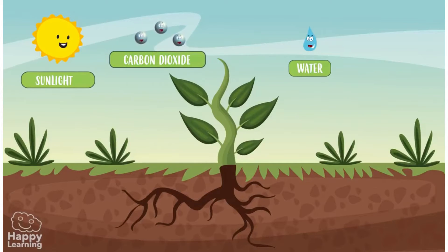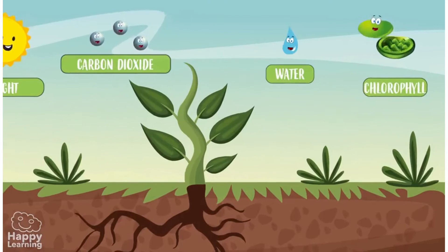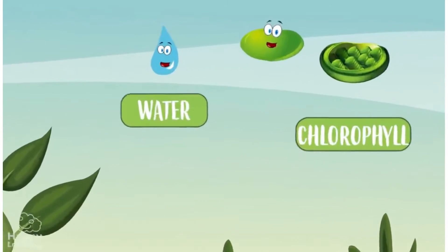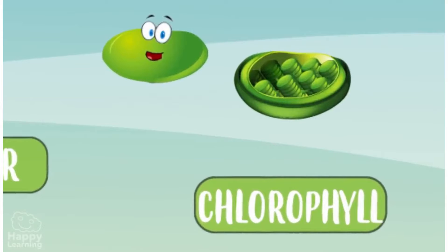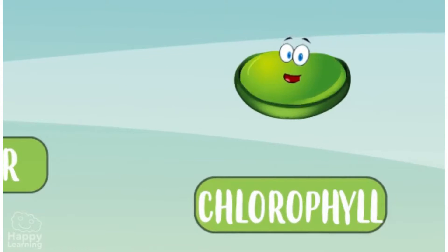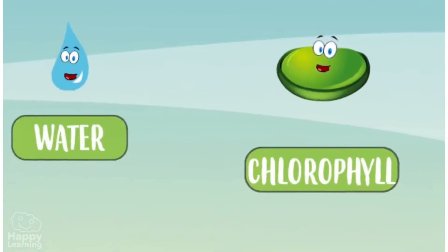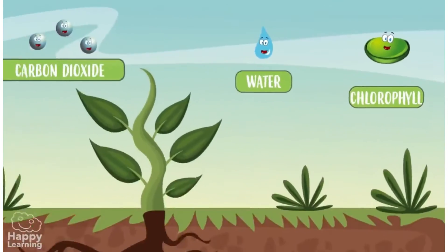And chlorophyll, which is a green substance that all plants have, and is fundamental for performing photosynthesis, since it could not happen without it.